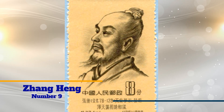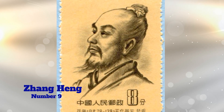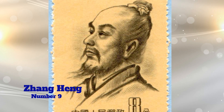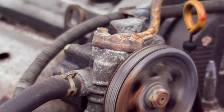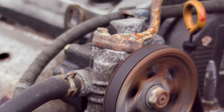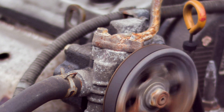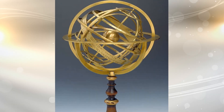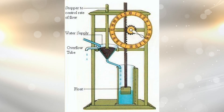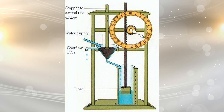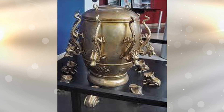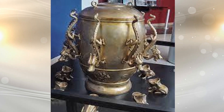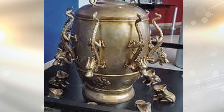Number 9: Zhang Heng. Zhang Heng was a Chinese polymath scientist who lived during the Han Dynasty. Zhang applied his extensive knowledge of mechanics and gears in several of his inventions. He invented the world's first water-powered armillary sphere, improved the inflow water clock by adding another tank, and invented the world's first seismoscope, which discerned the cardinal direction of an earthquake 500 kilometers away. He also improved the previous Chinese calculations of Pi.